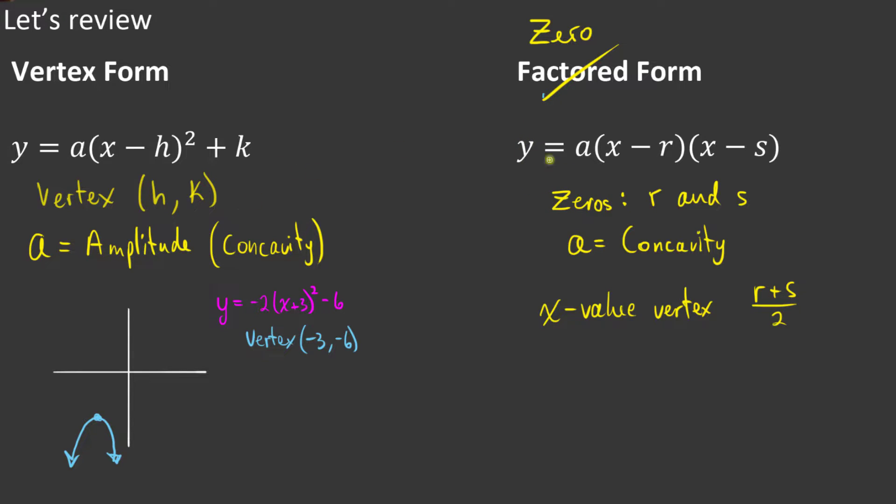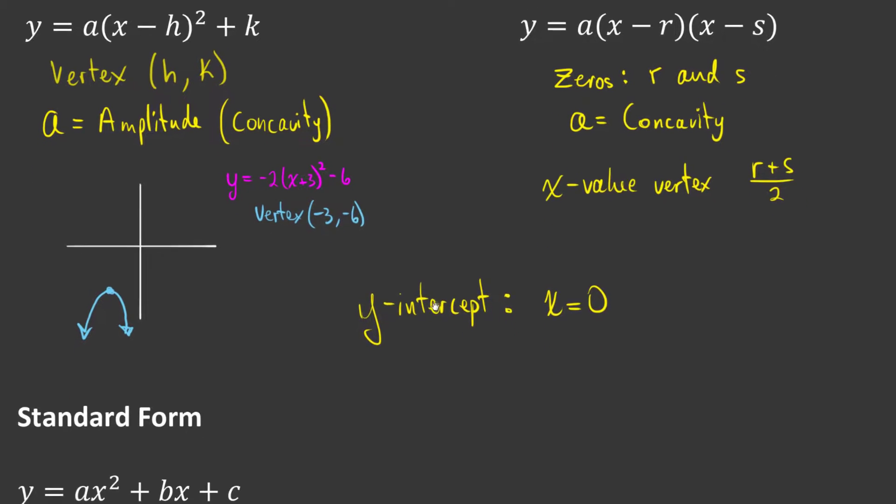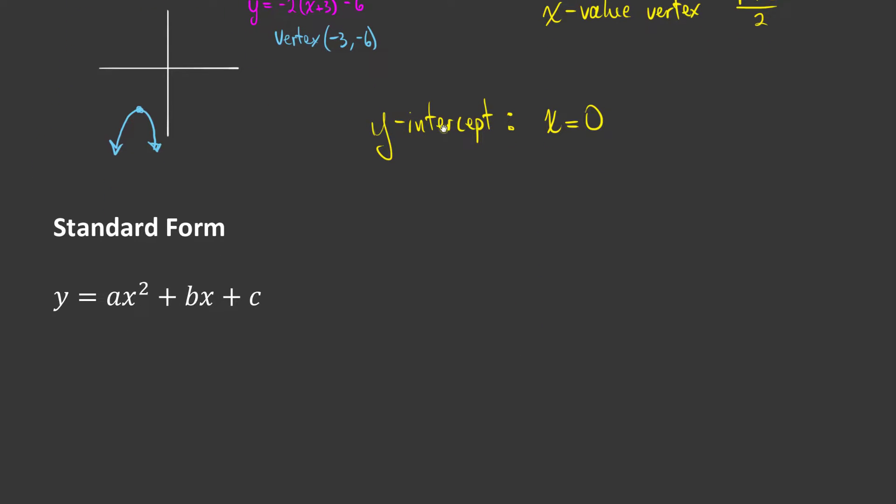Now, in both of these formats, if you wanted to get the y-intercept, you could still do that. The y-intercept occurs when x equals zero. So you could plug an x of zero into both of these equations and still get the y-intercept. But you do have to plug that in and do the math. Originally, you'd say that vertex form and factored form are the better ones of the three.